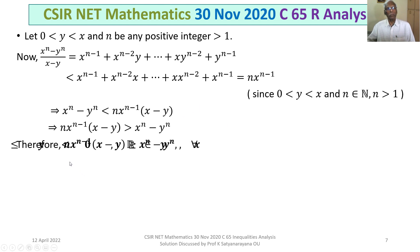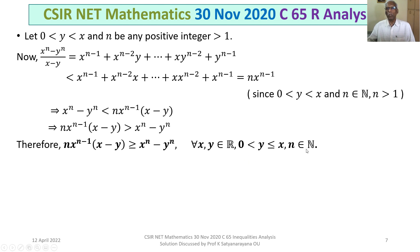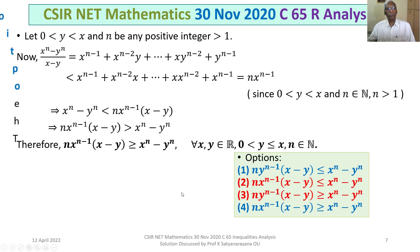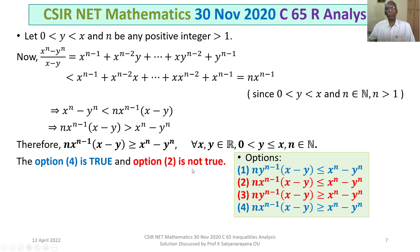Taking the exceptions into account, we get: n·x^(n-1)·(x - y) ≥ x^n - y^n, true for all x, y real numbers when 0 < y ≤ x and n ∈ ℕ. Our answer tallies with Option 4, and Option 2 is against it. Therefore Option 4 is true and Option 2 is not true. Our final answer is that Options 1 and 4 are true.